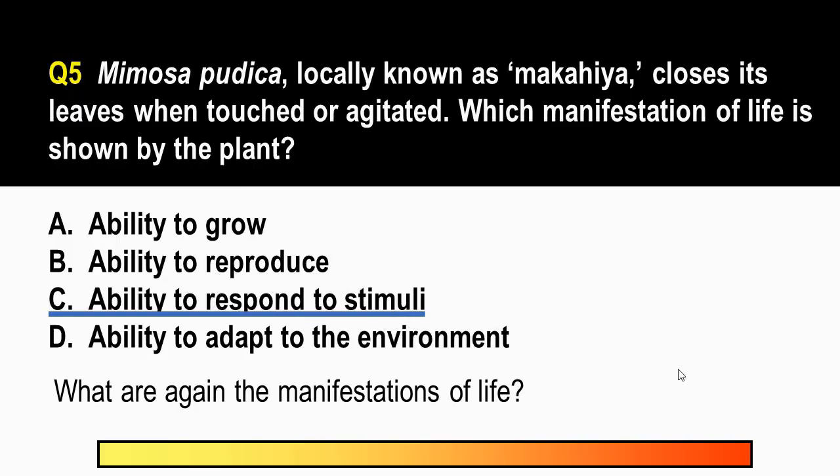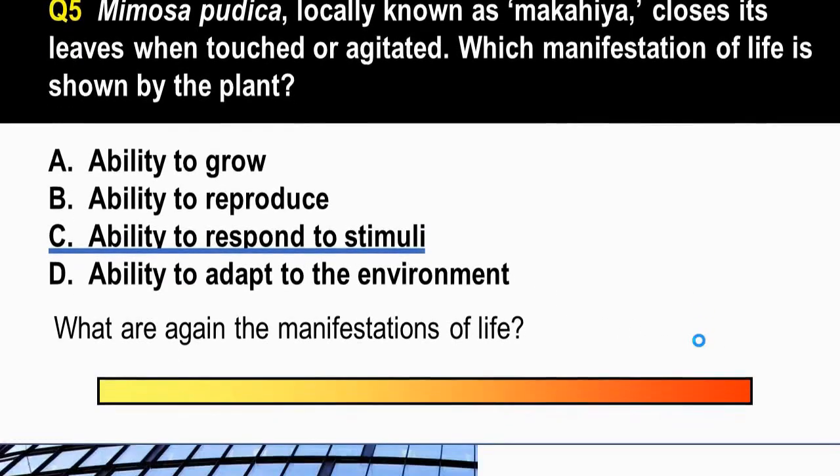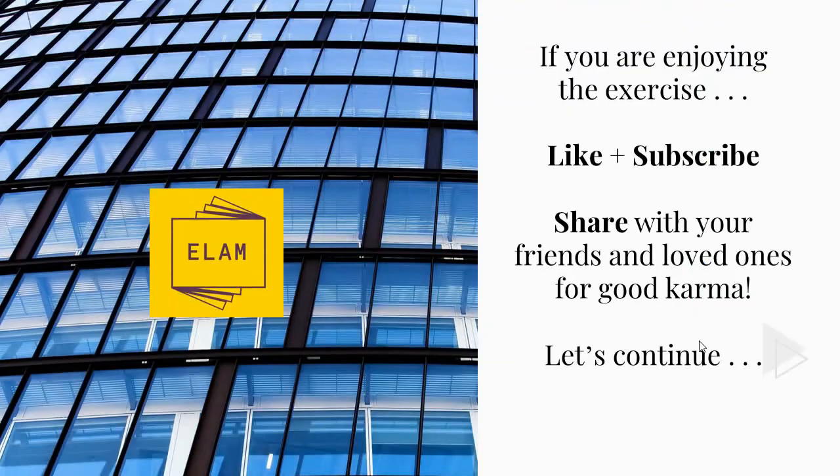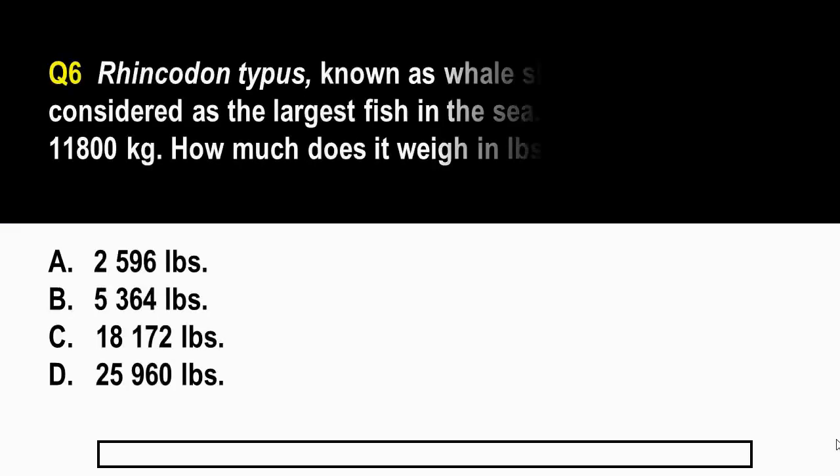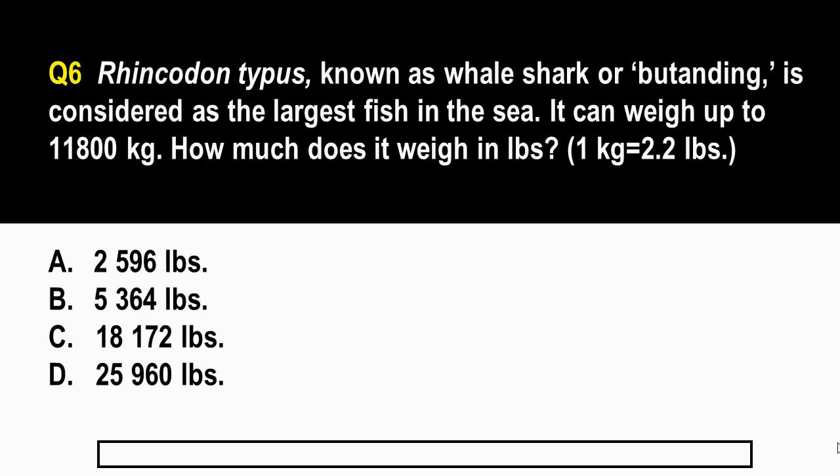Question number six. Rhincodon typus was known as the whale shark or butanding is considered as the largest fish in the sea. It can weigh up to 11,800 kilograms. The question is, how much does it weigh in pounds? So A, 2,596 pounds. B, 5,364 pounds. C, 18,172 pounds. Letter D, 25,960 pounds. So I'll give you about a minute for this.